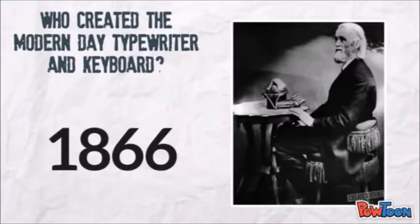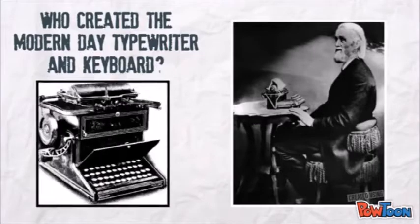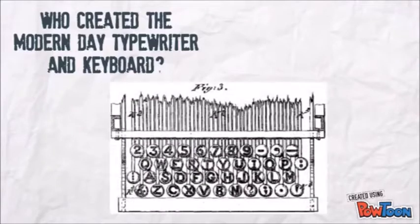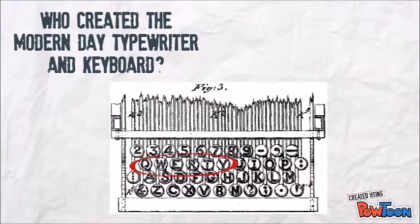In 1866, after five years of experimentation, Sholes and his associates produced the Sholes and Glidden typewriter, which is similar to the typewriter we know of today. The QWERTY keyboard found on that typewriter is still named for the first six letters on its top row, reading from left to right. You can still find that on the keyboard used in most English-speaking countries today.